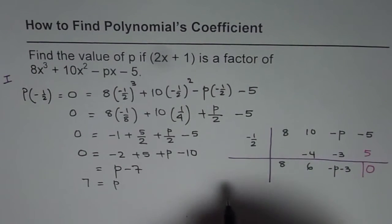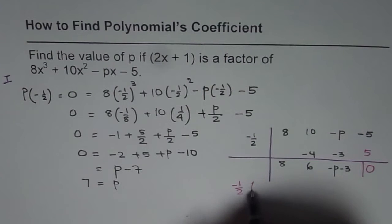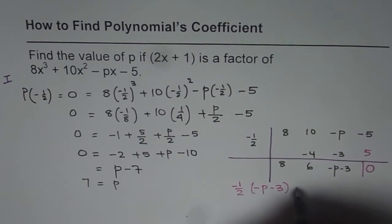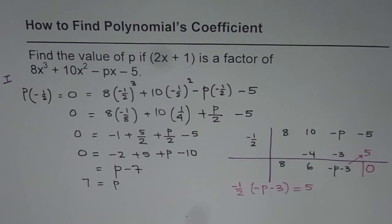That means what? That means that minus half times minus p minus 3 should be equal to 5. Do you see that? That means this. So from here, we can solve the value of p.